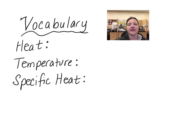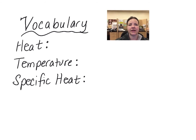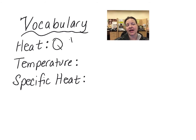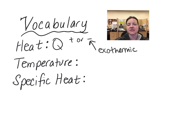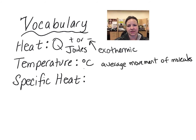You will want to understand basic vocabulary and the difference between heat, temperature, and specific heat. Remember heat uses the symbol Q and can be a negative Q if it is an exothermic reaction. Heat is measured in joules, whereas temperature is measured in degrees Celsius and is an average movement of the molecules within the substance.